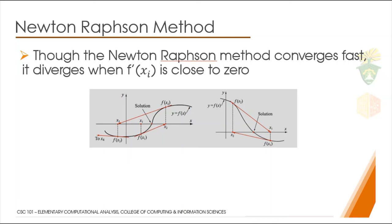Though the Newton-Raphson method converges fast, it diverges when f'(x₁) is close to zero. Newton-Raphson is faster compared to the two previous methods I discussed, the bisection and regula falsi. The problem with Newton-Raphson is that it may diverge. Diverge means it won't get the true solution. It won't reach the true solution if f'(x sub i) is close to zero. That is, the derivative at that point is close to zero.